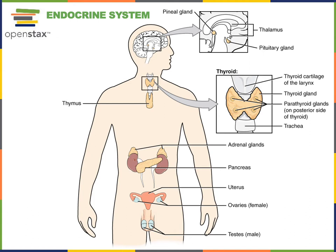An endocrine gland is a ductless gland that secretes hormones, which are chemical messages that travel through the blood to regulate target cells or target organs. So the hormone is a chemical message produced by an endocrine gland.